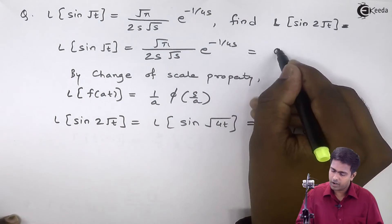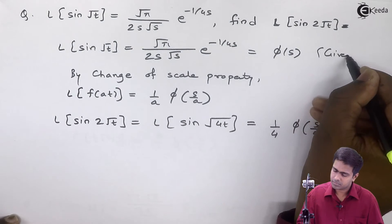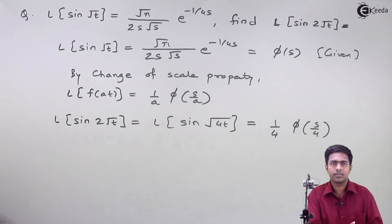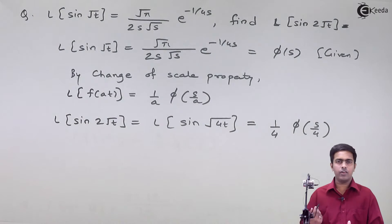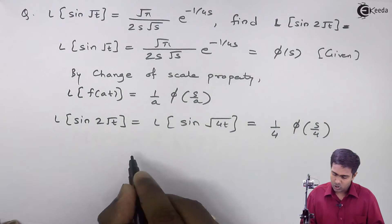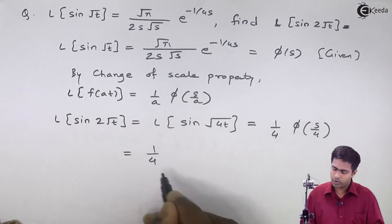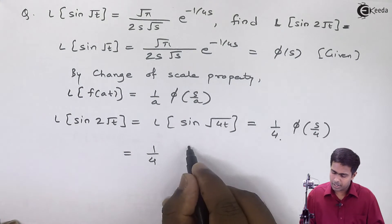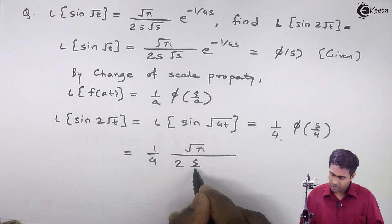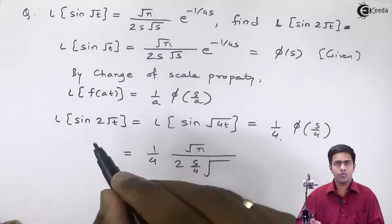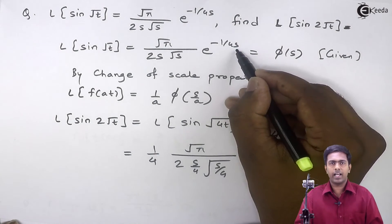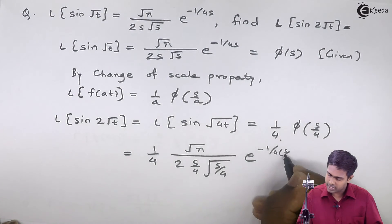To find phi of s by 4, we use phi of s, which is given in the question. The Laplace of sine root t equals root pi upon 2s root s, e raised to minus 1 upon 4s — this is phi of s. To find phi of s by 4, I replace s by s by 4 everywhere in phi of s. So we get 1 upon 4, root pi upon 2, s is replaced by s by 4, root s becomes root of s by 4, and in the exponent, s is replaced by s by 4, making it 4 into s by 4.